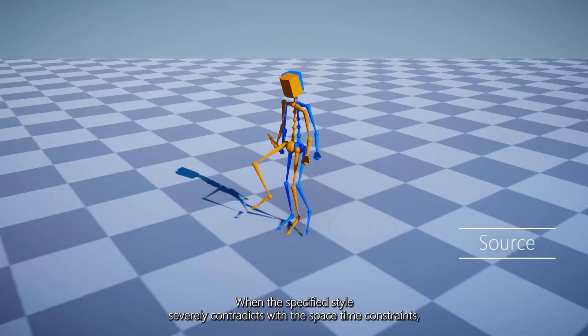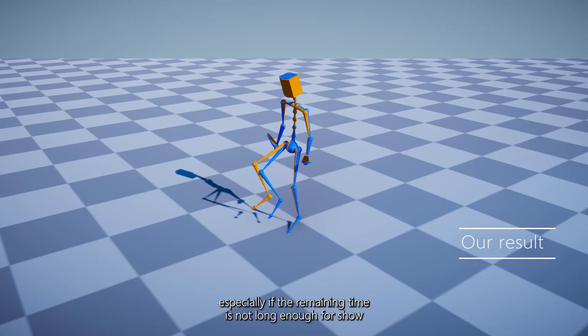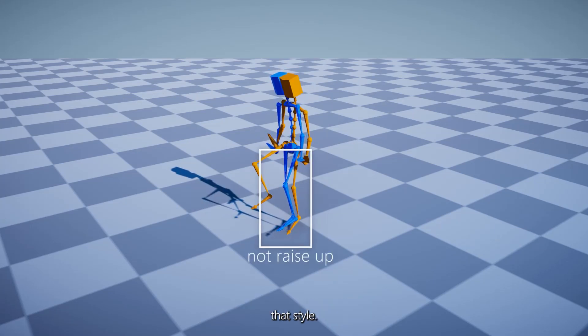When the specified style severely contradicts with the space-time constraints, our model favors the control rather than the style, especially if the remaining time is not long enough to show that style.